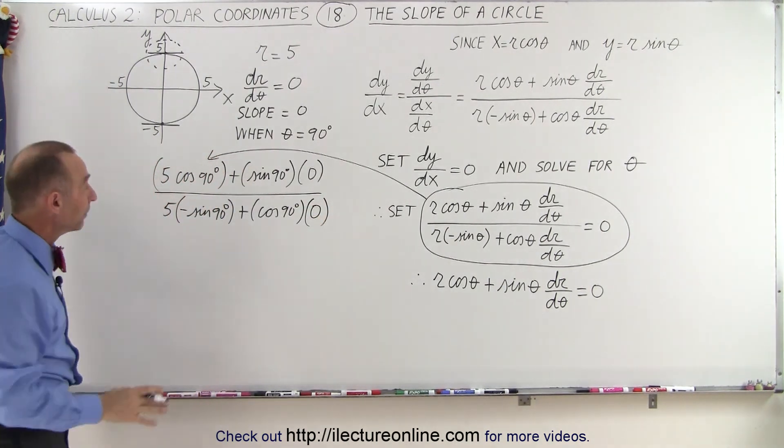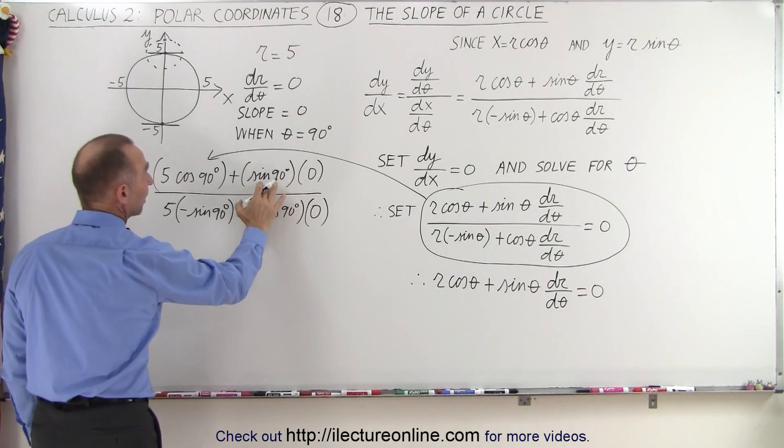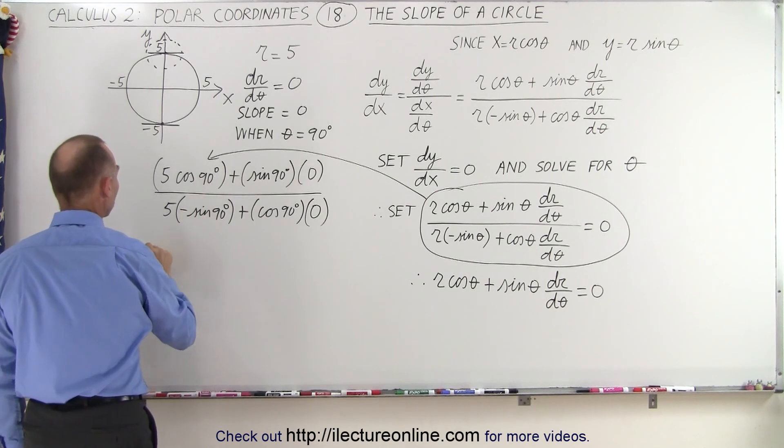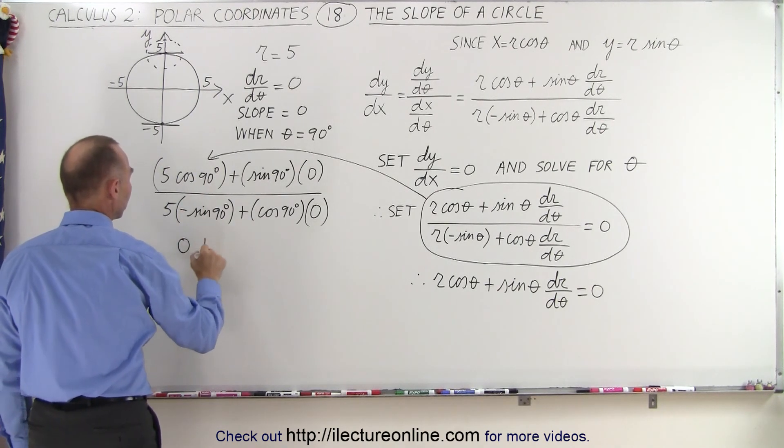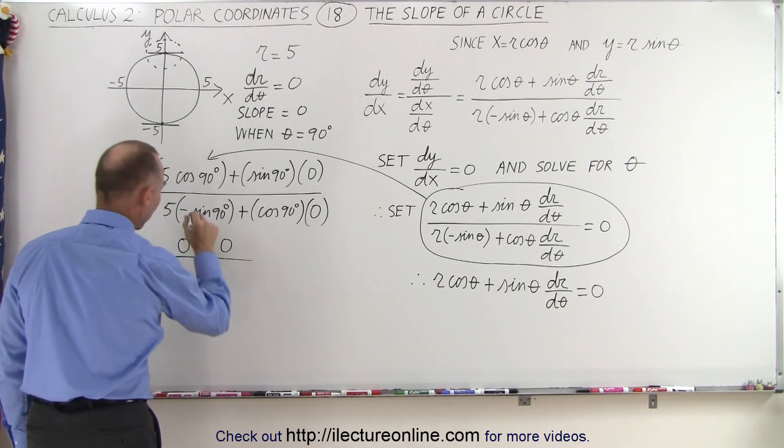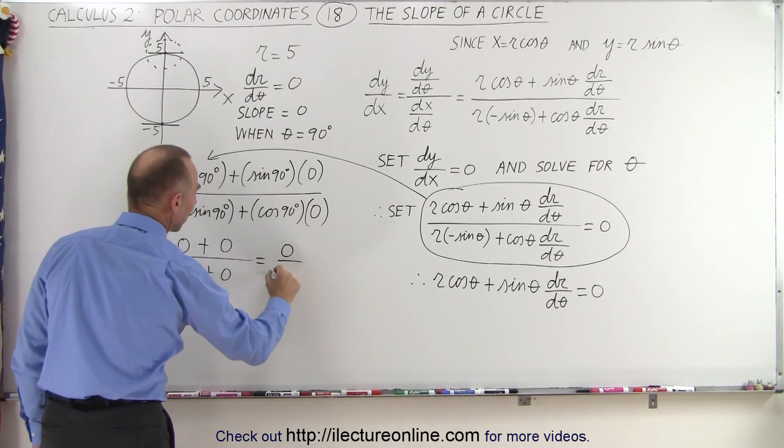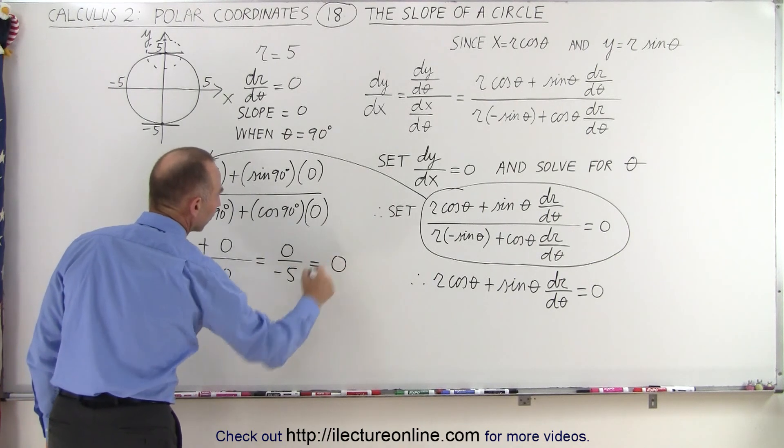So now let's evaluate that. Well, 0 times anything is 0, so these two become 0. The cosine of 90 is 0 as well. So this becomes equal to 0 plus 0 divided by minus 5 plus 0. So this becomes 0 divided by minus 5, which of course is 0.